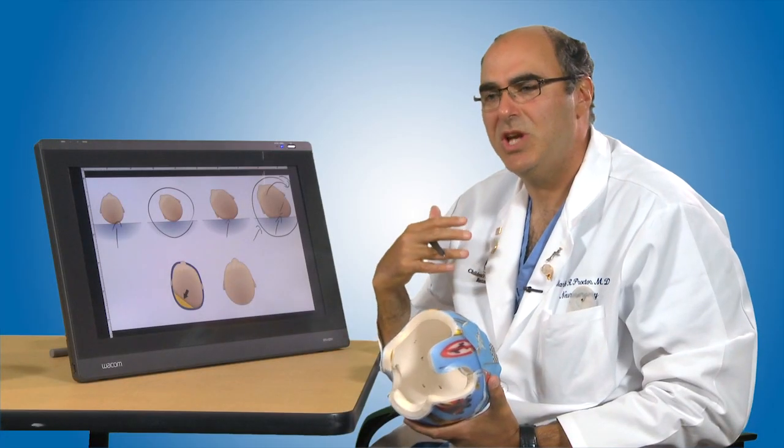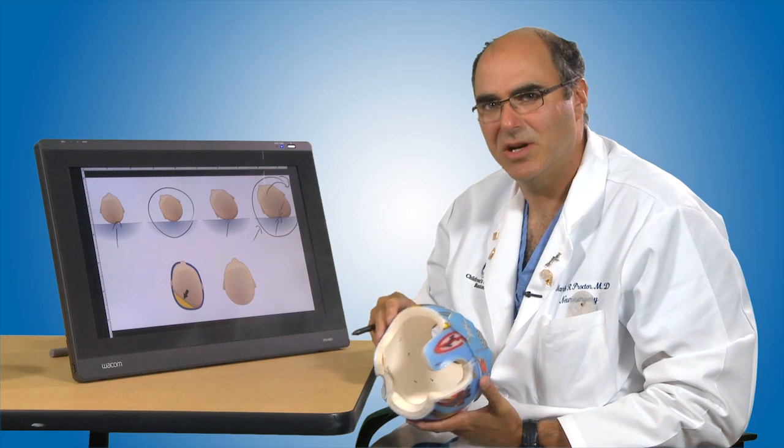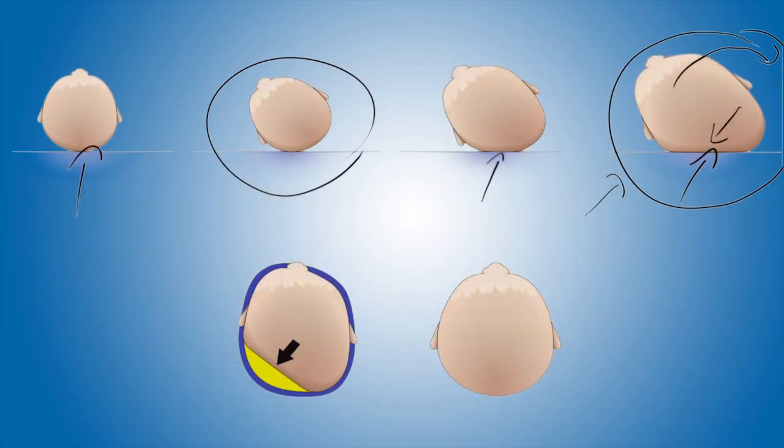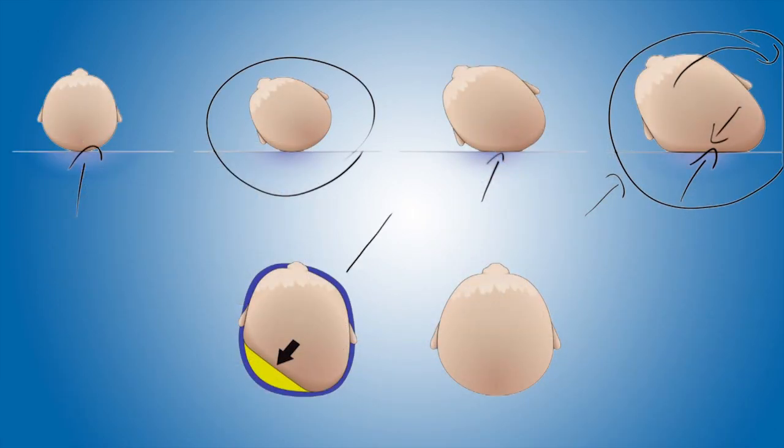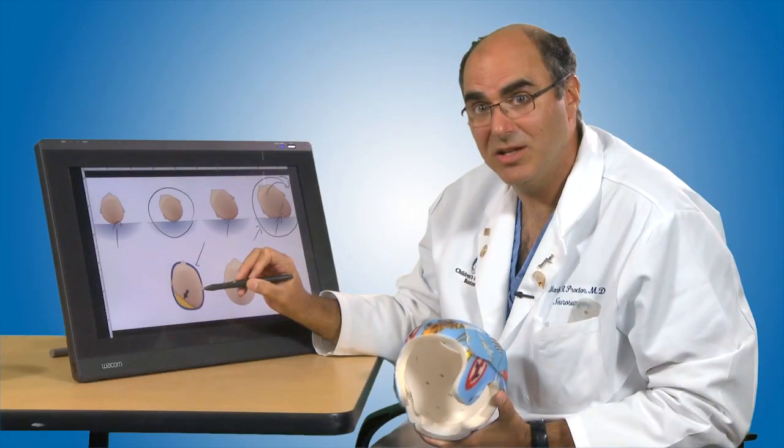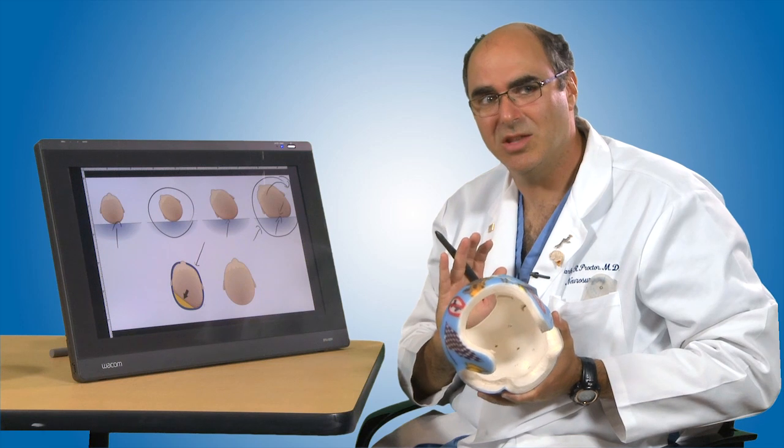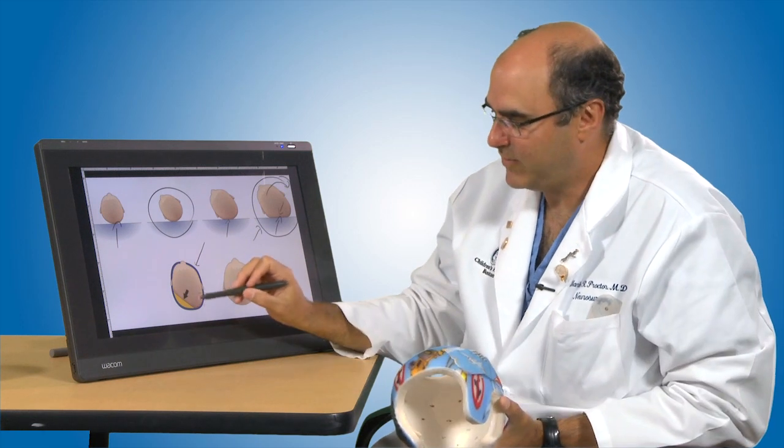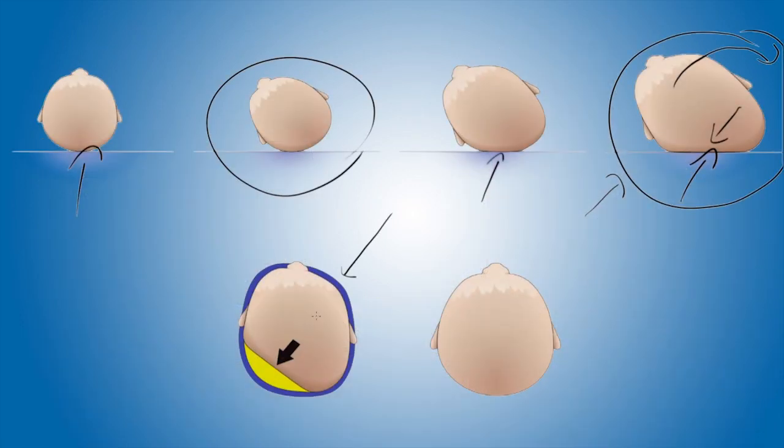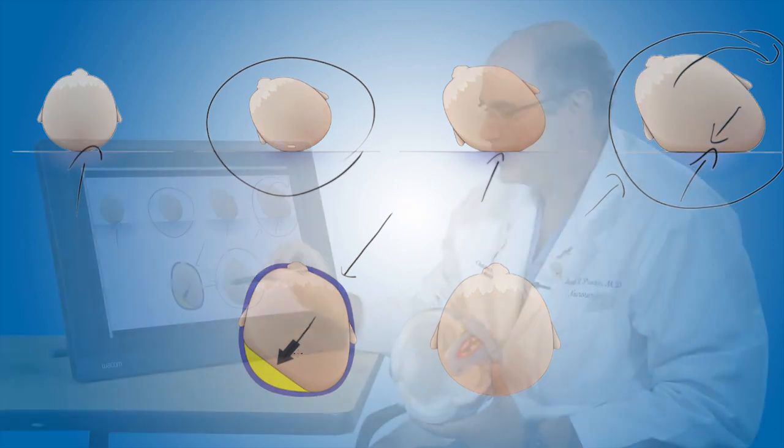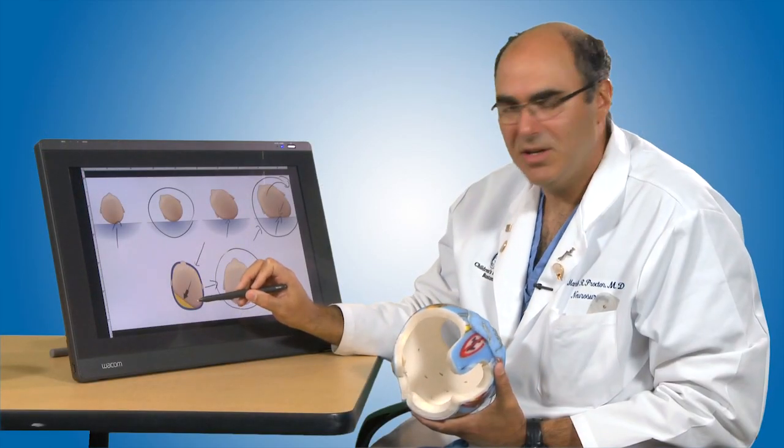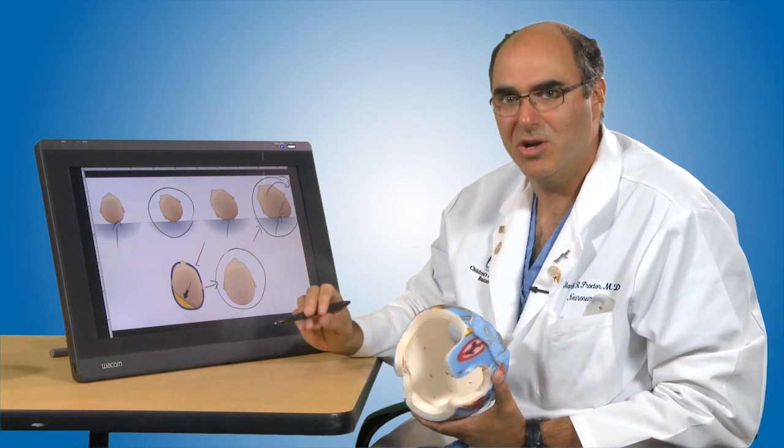When the change in the head shape is a little bit more severe, we might consider a helmet for the child. What we can see here in this diagram is that the blue represents the helmet. And what's important to note is that the helmet is really a shield for the child's head. In other words, it's not like a vise. It's not squeezing the child's head in on the prominent areas. It's shielding the flat areas so that the normal growth of the child's head is filling into the flat areas. Usually we can make this about 50 to 90% better than it was at the start of helmet therapy.